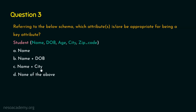Name alone cannot be a key attribute because multiple students may have the same name. Name and date of birth is a composite key — it may uniquely identify a tuple, but we can't guarantee 100%, as students may share the same name and date of birth. Name plus city is also not appropriate, as more than one student from the same city may share a name. Therefore, the right answer is Option D, none of the above — though name and date of birth may work to some extent depending on the database.